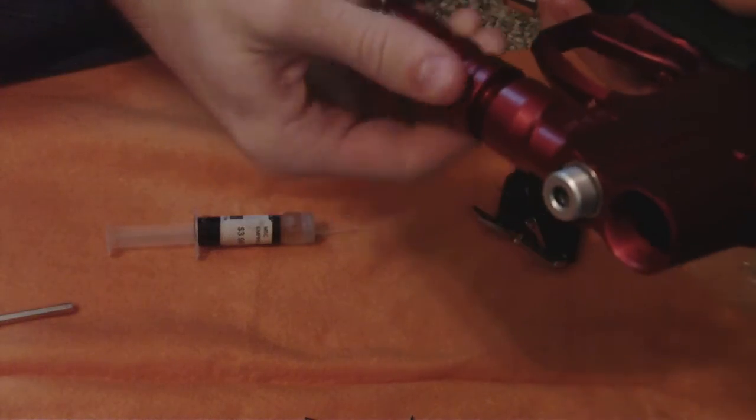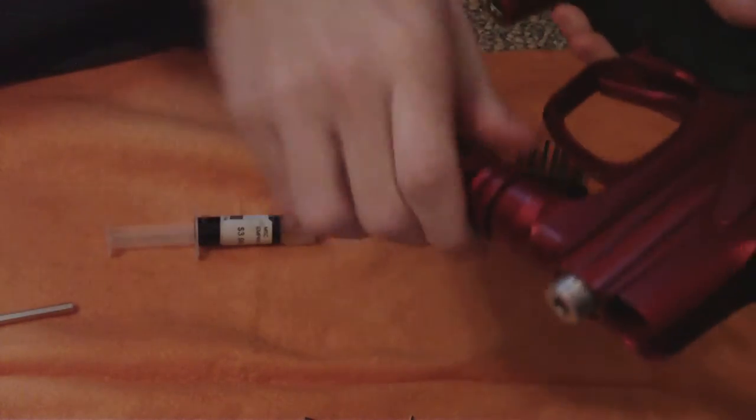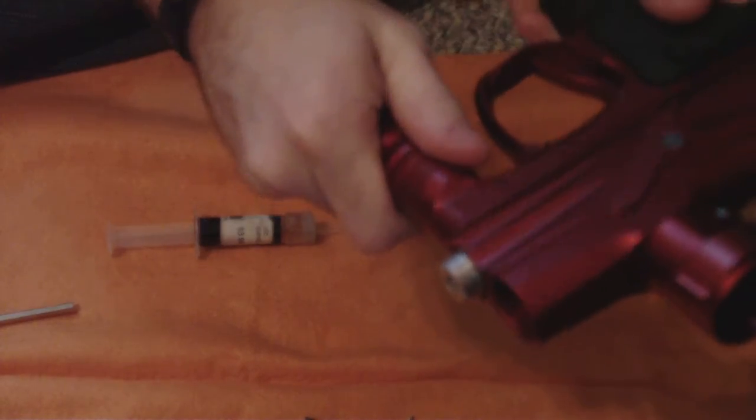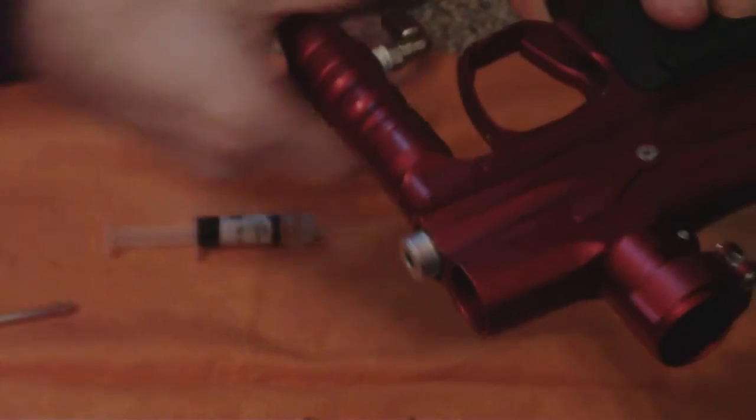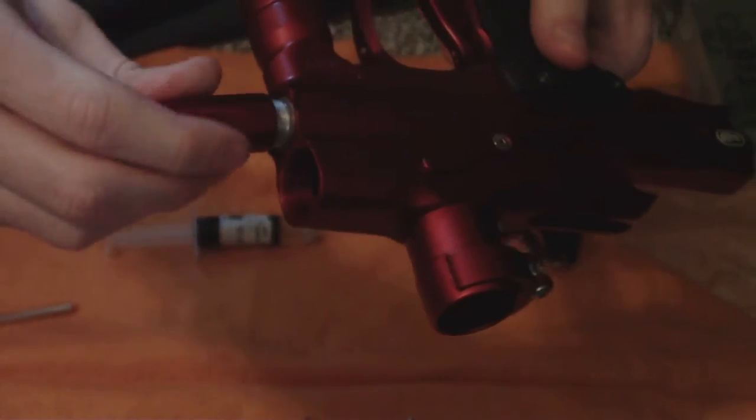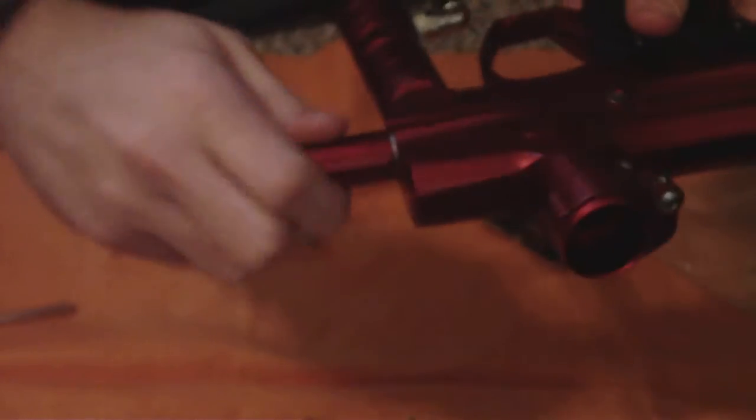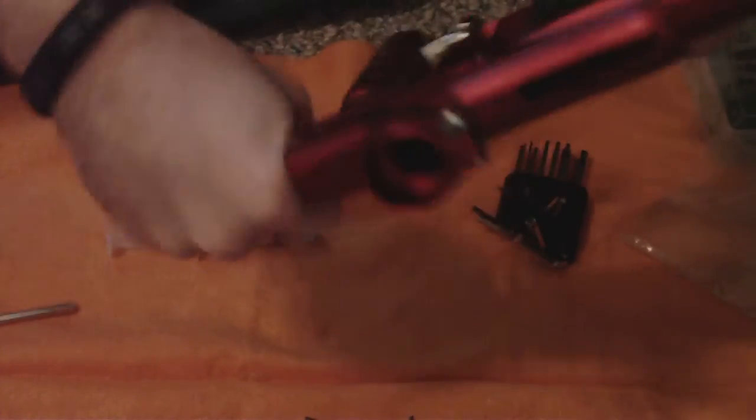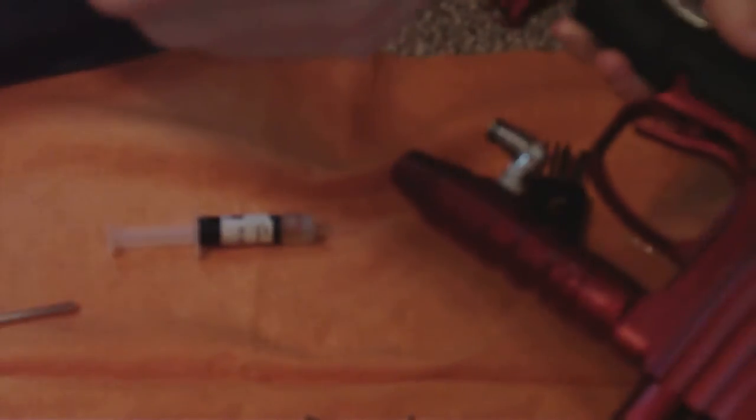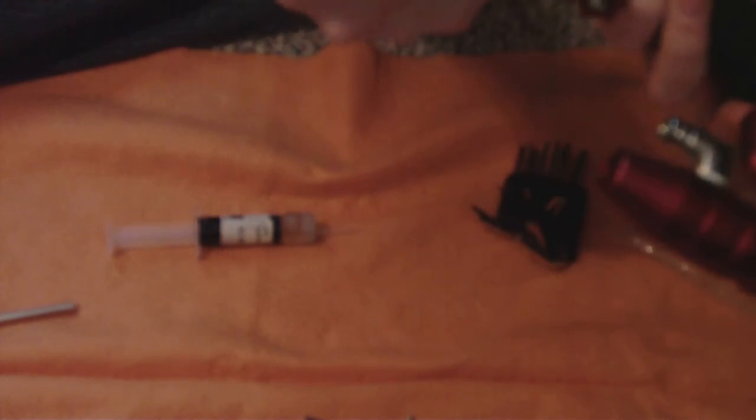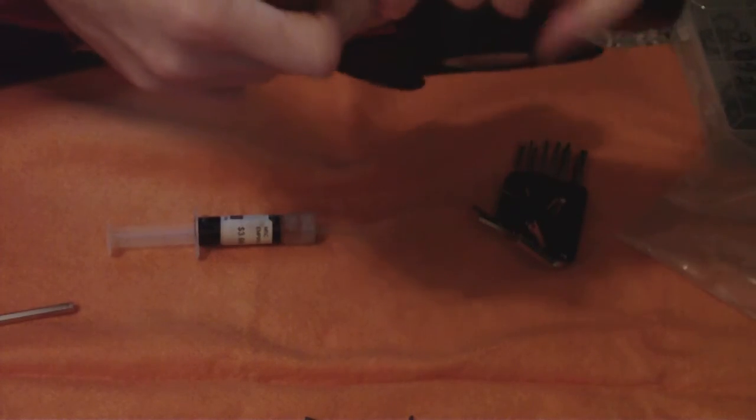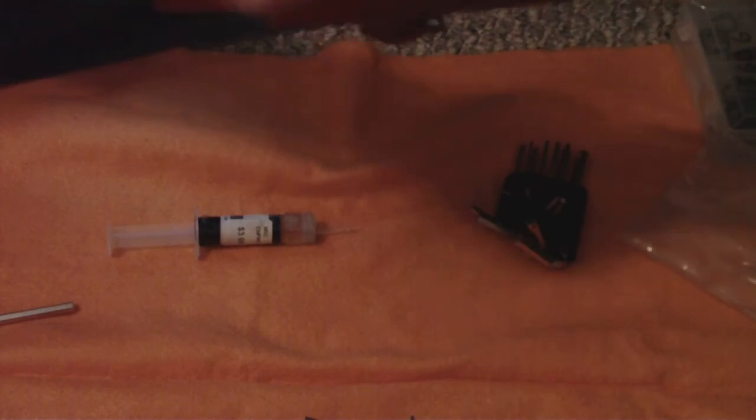Go ahead and screw your high pressure reg back on. And then go ahead and put your low pressure reg on. You can go ahead and put your macro line back in.